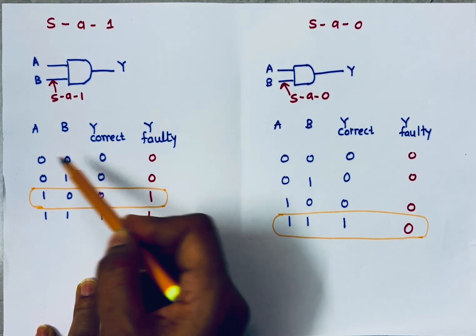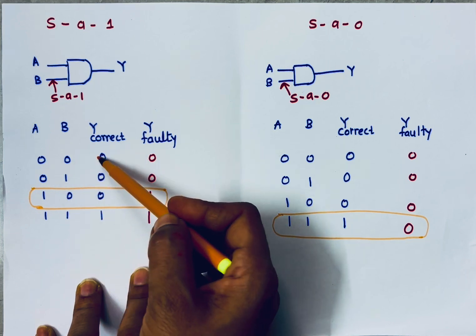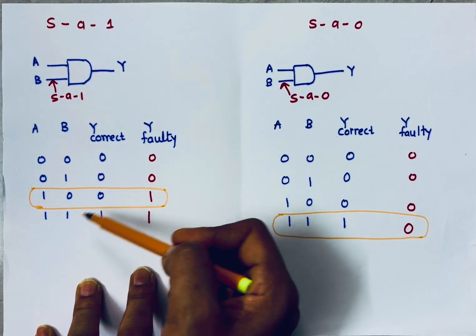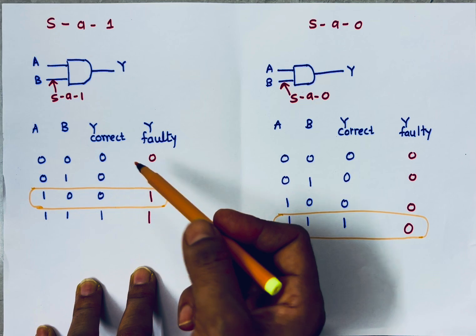To identify stuck at 1 fault, let's assume this input B is stuck at 1. When I will apply 0,0, see my correct outputs are for 0,0 it is 0, 0,1 is 0, 1,0 is 0, for 1,1 it is 1.